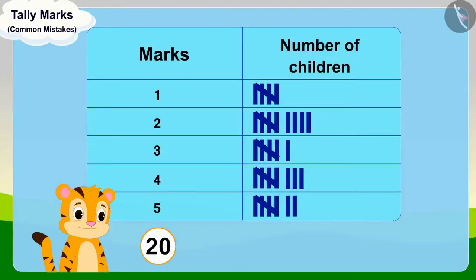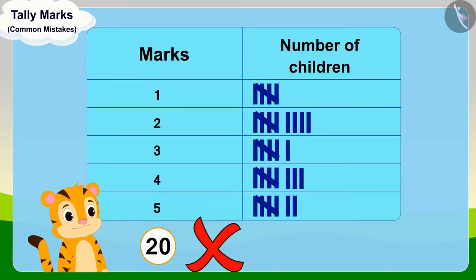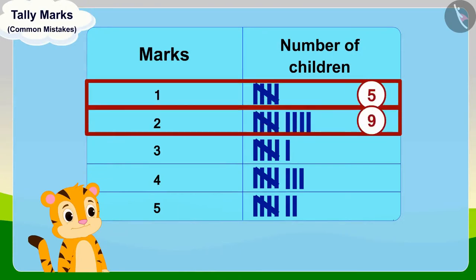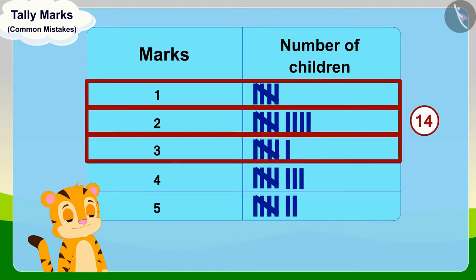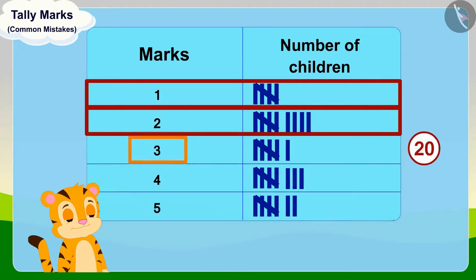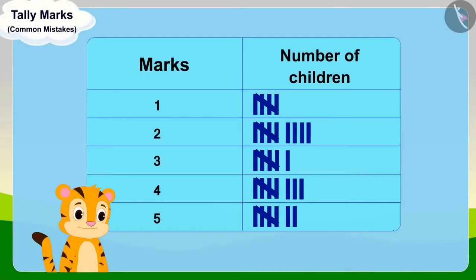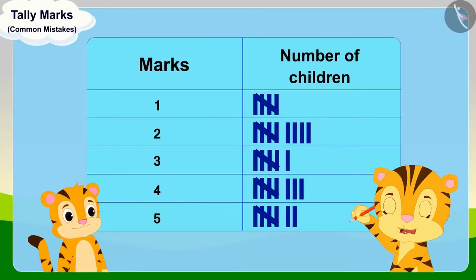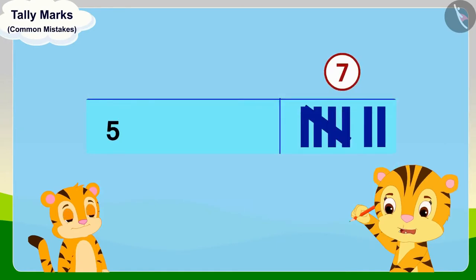That's correct — Shere Khan's answer is wrong. Actually, while adding the number of children getting less than three marks, Shere Khan has also included the tally marks of those children who got exactly three marks. Mrs. Khan said to Shere Khan, look, son, seven children in your class got five out of five marks.